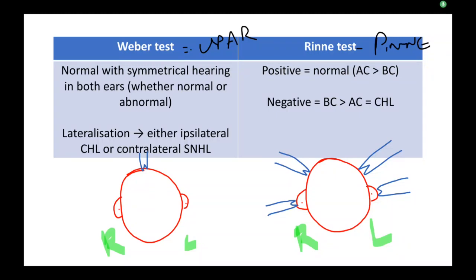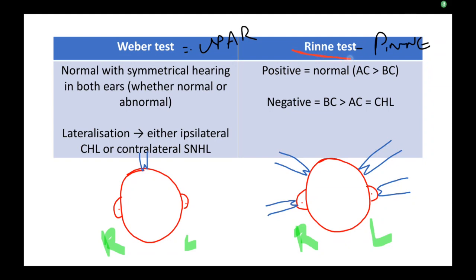In this video we're going to talk about two very important ENT tests: Weber's test and Rinne's test. These two tests are the basic tests to assess hearing loss in any patient, and we have to know these at any cost. Let's talk about Rinne's test first.